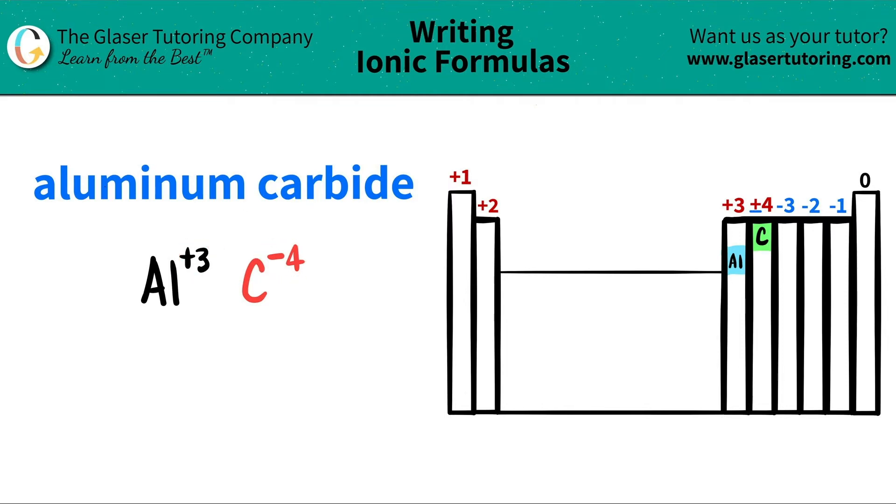Now, since you have both components, we do this little trick where we crisscross the charges just to say how many of each element I need. So this plus three crisscrosses down, telling me that I need three of the carbons, and then this negative four crisscrosses down,